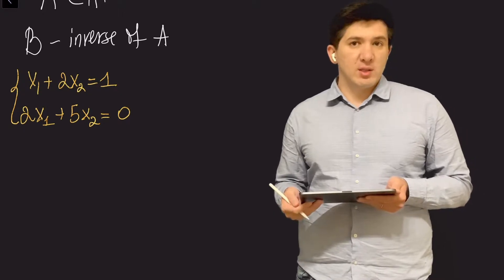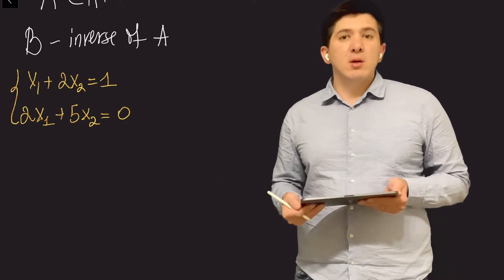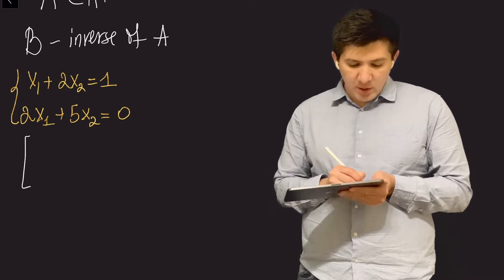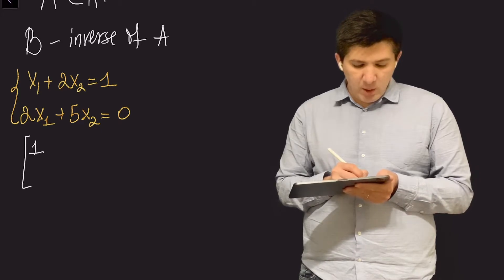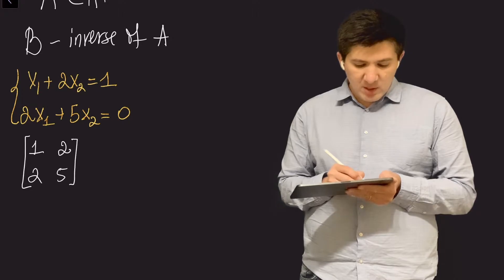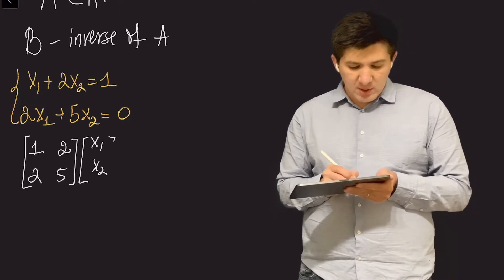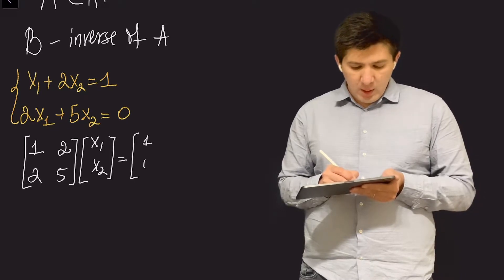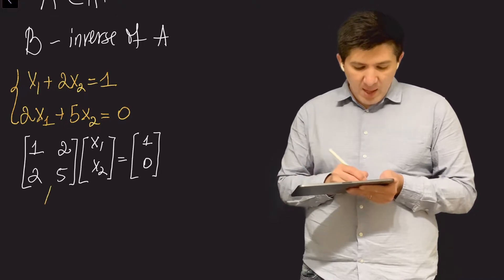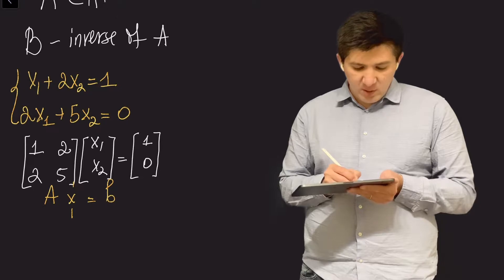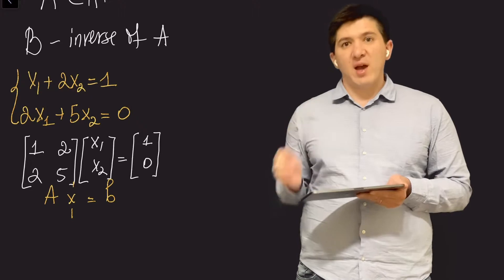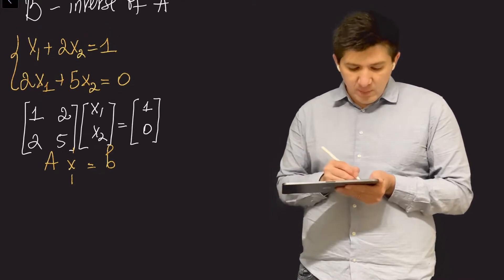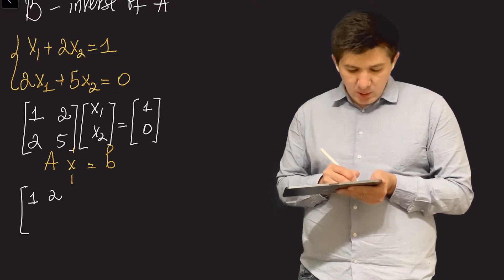We've learned that we can solve this using Gauss-Jordan elimination. We write the system in matrix form by copying the coefficients of the left-hand side into a matrix: [[1, 2], [2, 5]], multiplied by the vector [x₁, x₂], equals the vector [1, 0]. This gives the form Ax = b. To find x, we create the augmented matrix [1, 2 | 1] and [2, 5 | 0], and bring it to reduced row echelon form.